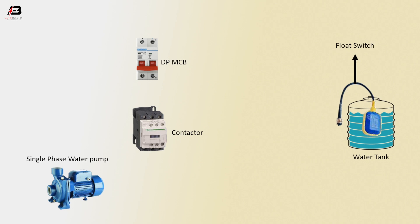Float switch phase connection to double pole MCB. Neutral connection to double pole MCB. Phase and neutral connection from DP MCB to magnetic contactor. Neutral connection shorted with magnetic contactor NC point.